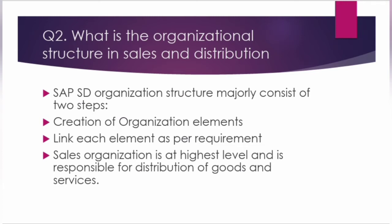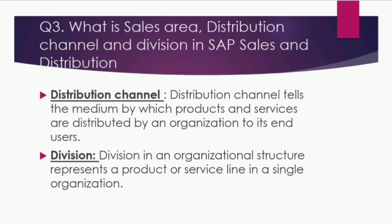The next question is: what is the organizational structure in Sales and Distribution? The SAP SD organizational structure majorly consists of two steps: first, creation of organizational elements in the SAP system, and second, linking each element as per requirement. At the top of the organizational structure in the SD module, the sales organization is at the highest level and is responsible for the distribution of goods and services. SAP recommends keeping the number of sales organizations to a minimum, which helps make the reporting process easy — ideally a single sales organization.